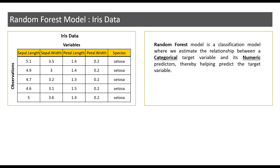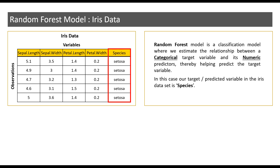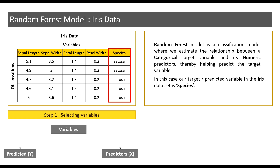I have the IRIS dataset on the left hand side here. In this case, since species is the only categorical variable in this dataset, species becomes our target or y variable. Similar to when we were building the regression models, we have two steps here as well. Step one is variable selection, or selecting variables.